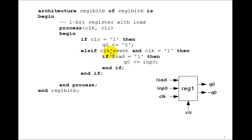Else, on the rising edge of the clock, remember clock tick event and clock equals 1 means rising edge of the clock. Then, if load equals 1, then Q0 gets input 0. So this is the behavior of a 1-bit register.